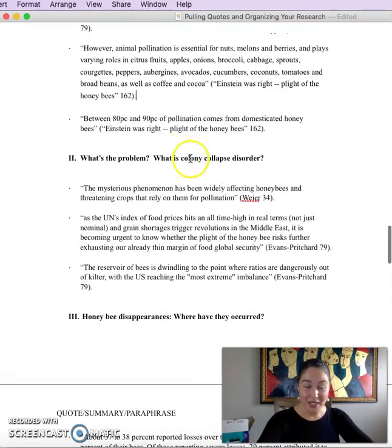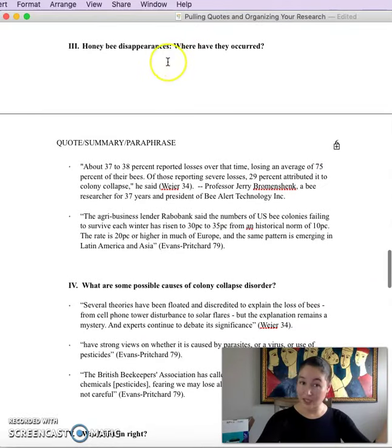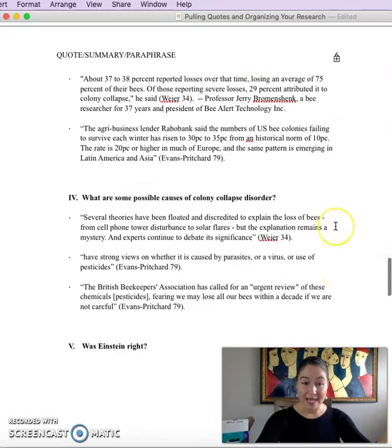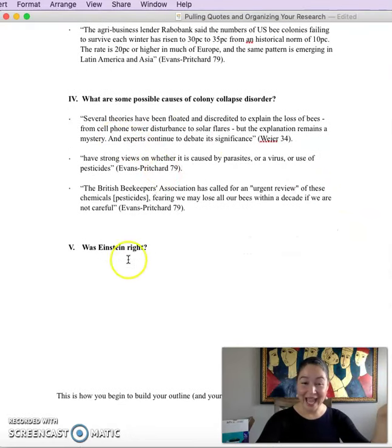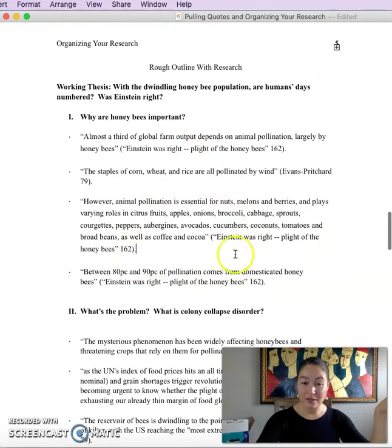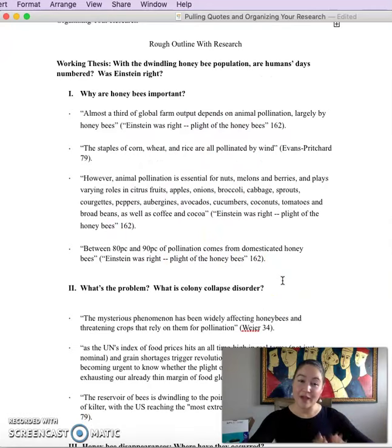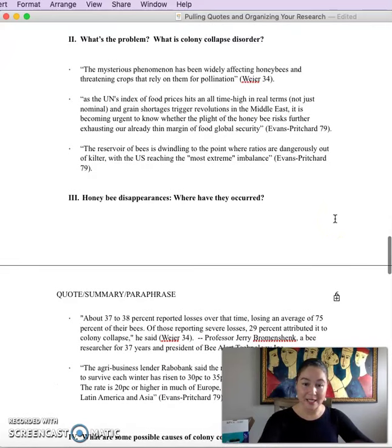Okay, so same thing for the second paragraph. I did the same thing. I said, okay, what's the problem? What is colony collapse disorder? And I pulled all the quotes that I found from those three sources that you saw in the previous pages that would help to answer those questions. I did the same thing for paragraph three. I did the exact same thing for paragraph four. And now we're at paragraph five. Okay, hold on. So did you notice how I have a lot of quotes under Roman numeral one? So I feel like five quotes, four or five quotes in the first body paragraph? That's pretty good.